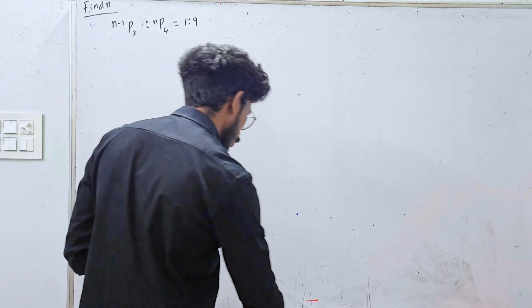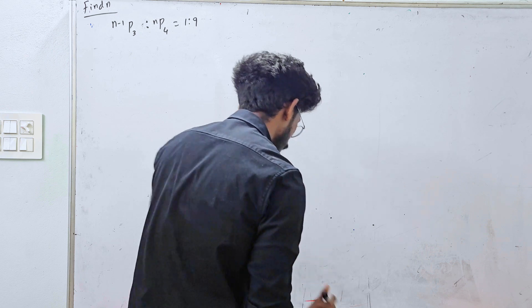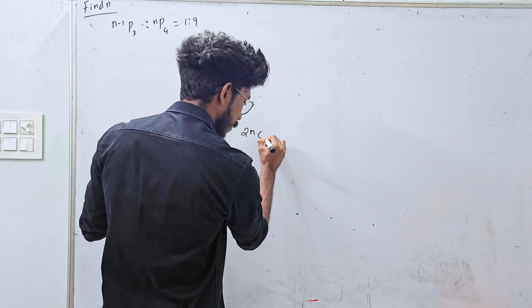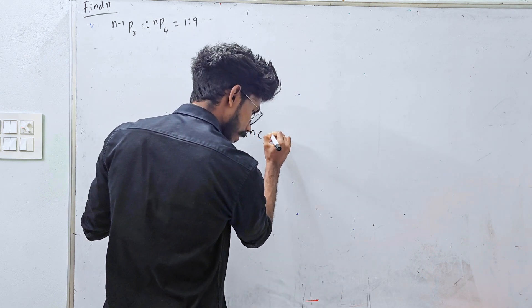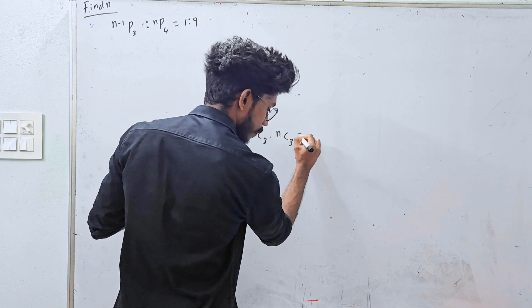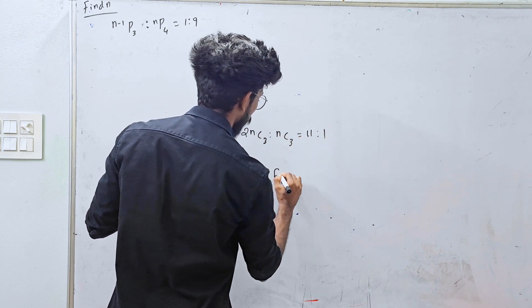This question you will also know. Second: 2nC3 divided by nC3 is equal to 11 to 1. And find n.